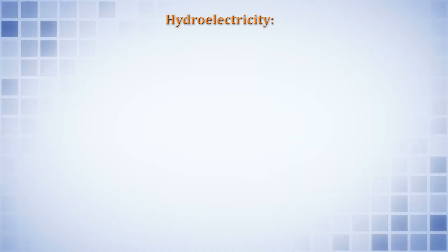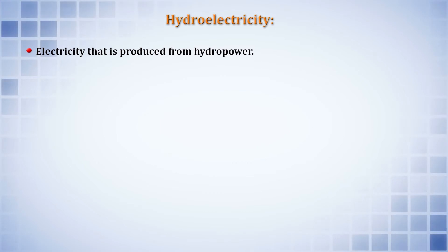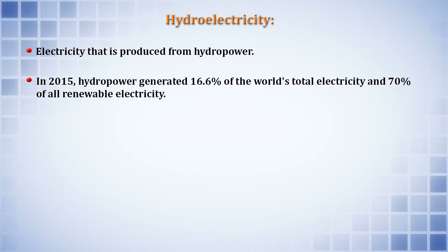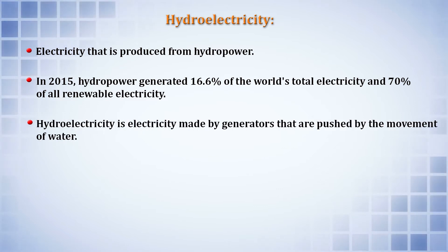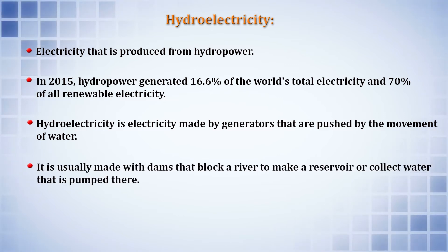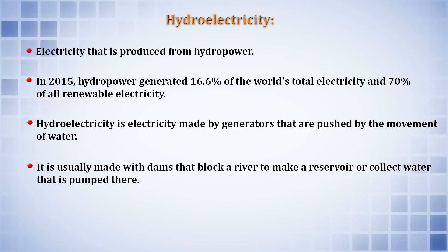Hydroelectricity is electricity produced from hydropower. In 2015, hydropower generated almost 16% of the world's total electricity and 70% of all renewable electricity. Hydroelectricity is made by generators pushed by the movement of water, usually using dams that block a river to make a reservoir, or by collecting water that is pumped to the facility.